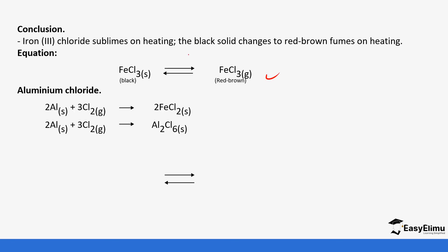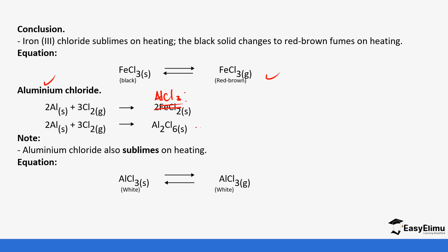The same approach applies to aluminium chloride. Aluminium reacts with chlorine to form aluminium chloride, and it can also react with chlorine to form the dimer. Aluminium chloride also sublimes — when heated it forms white fumes which cool back to form the solid.